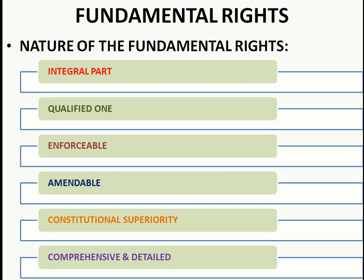Second, fundamental rights are qualified, not absolute - certain restrictions are imposed on them. For example, the right to assemble peacefully is qualified with 'without arms' - that is a kind of restriction. Without such restrictions there would be a threat to security. Except for Article 17 (right against untouchability) and Article 24 (right against working in hazardous occupations), which are absolute rights, the other fundamental rights are qualified ones.